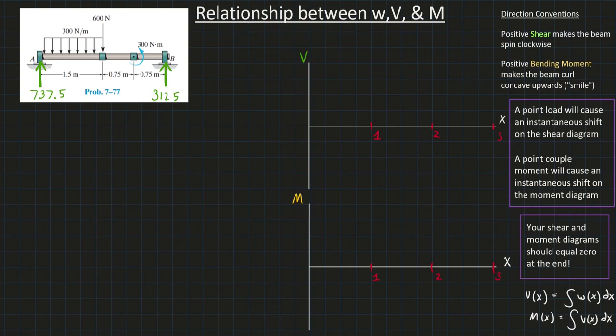So in the last video, we did this problem using the indefinite integral method. We did the indefinite integral of the w, got our v, and of the v, they got our m. And every time we did that indefinite integral, we had a plus c, and we had to figure out that plus c.